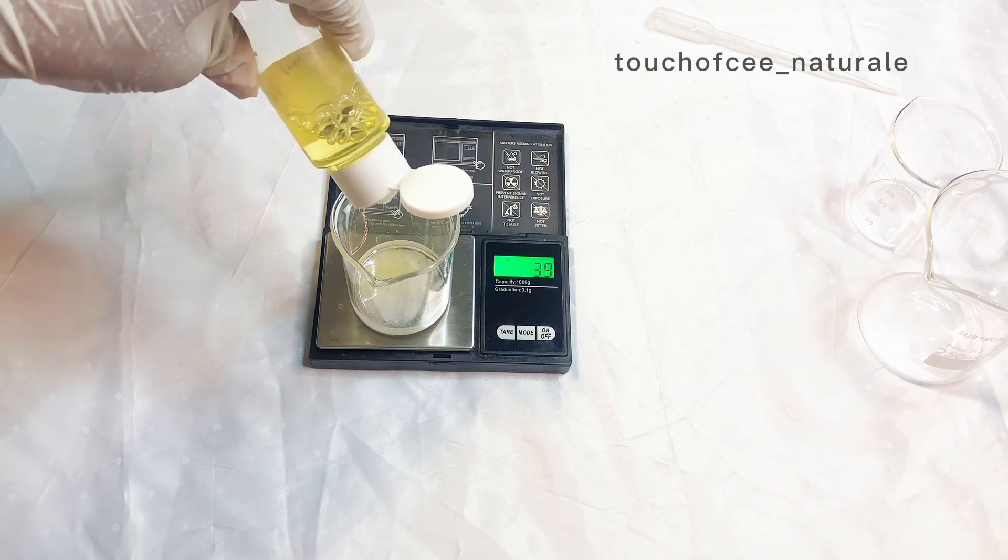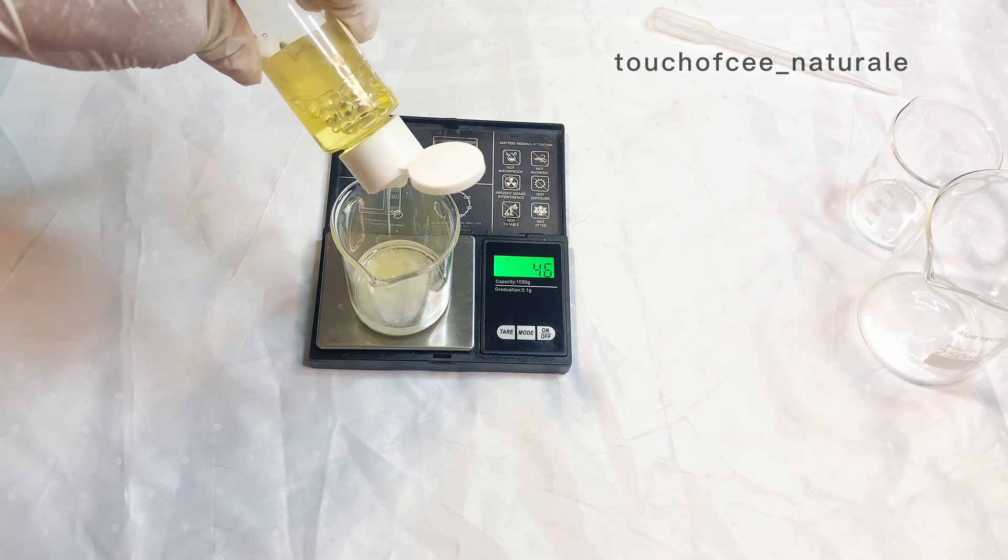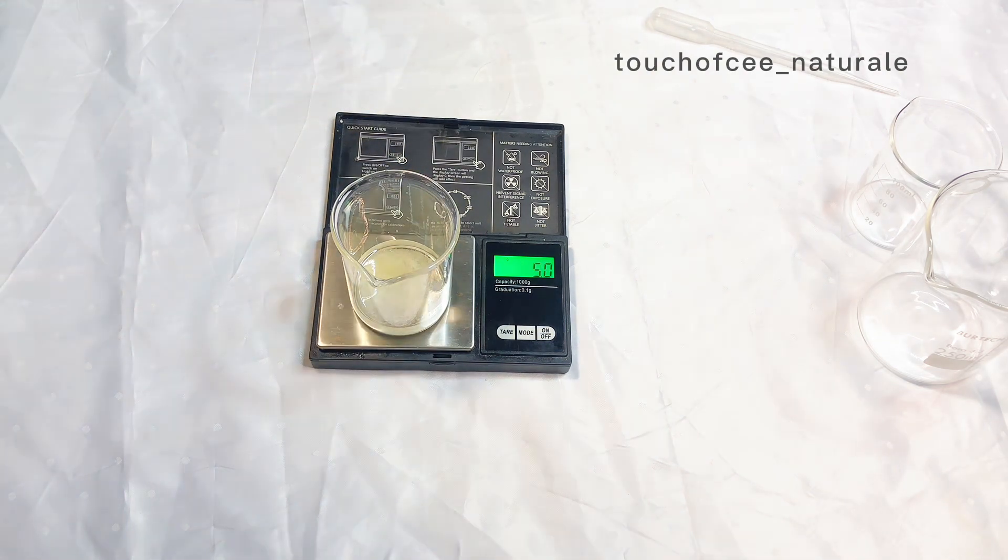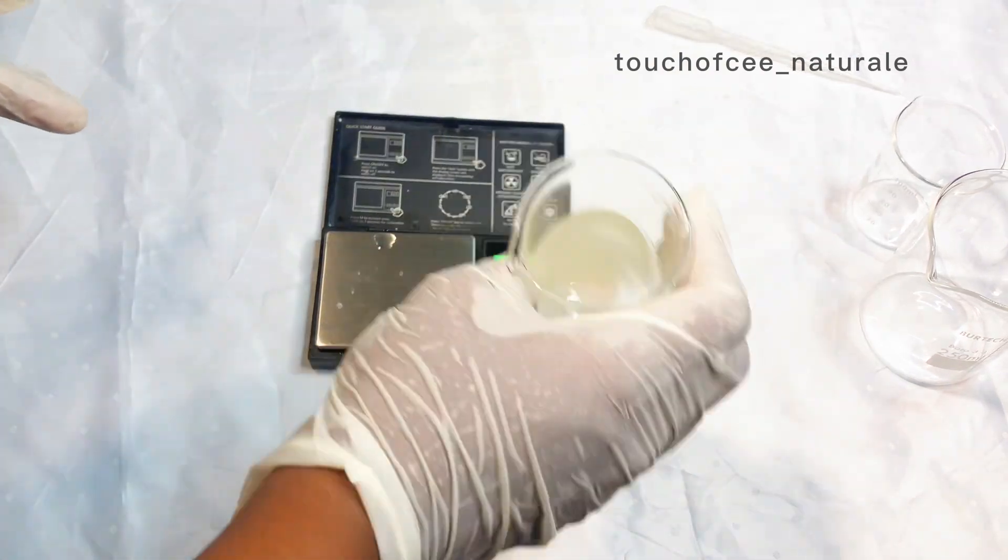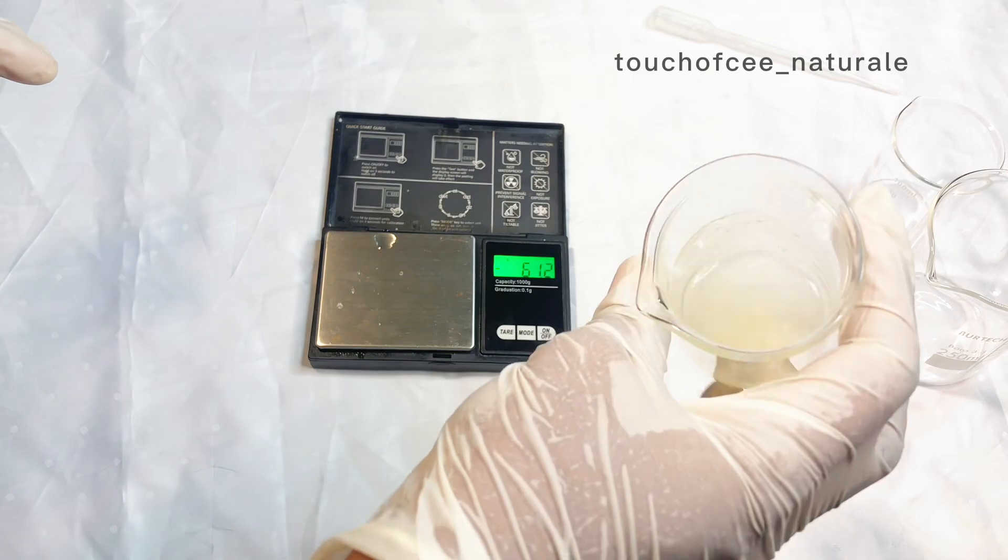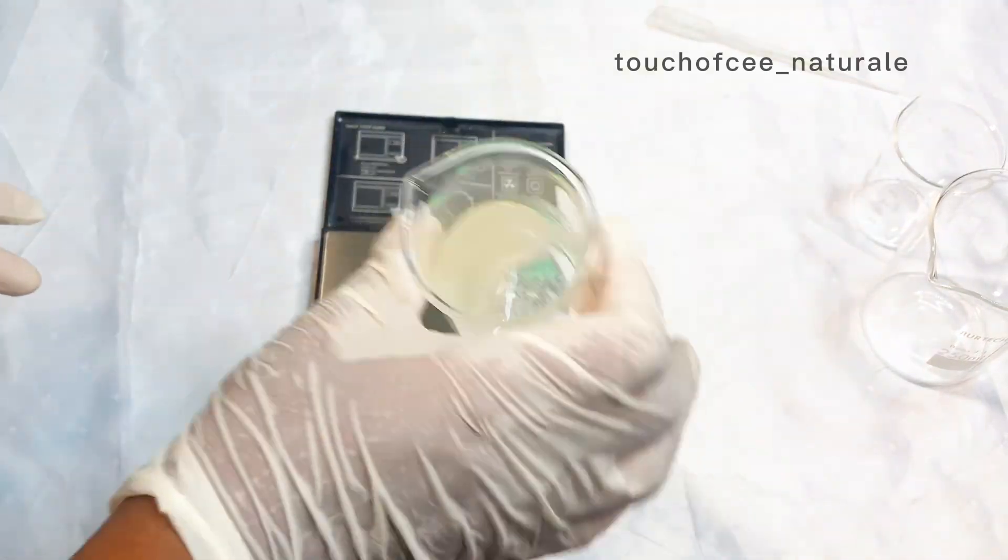So after measuring out my polysorbate 80, the next thing I'm going to do is to give this a bit of a mix. So I'm just shaking it a little bit so that everything is going to be incorporated. You can see it is not dissolved yet, it is still cloudy.